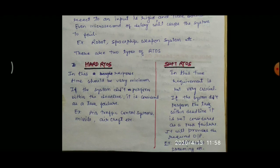The second type is soft RTOS. In soft RTOS, the time requirement is not very crucial. If the system did not perform the task within the deadline, it is not considered a task failure — it will provide the required output later. An example of soft RTOS is multimedia streaming. In multimedia streaming, when we are watching something online, it takes time for buffering, and soft RTOS is used in that system.